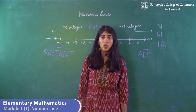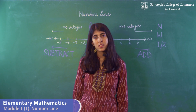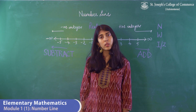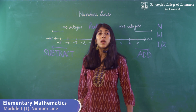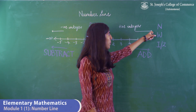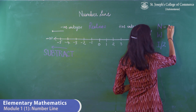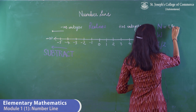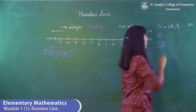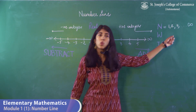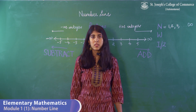The first type of number we're going to look at are natural numbers. Natural numbers are also called counting numbers. They are represented by the letter N, and they start with the number 1, 2, 3, and they move on to infinity. If you notice, natural numbers are mostly positive numbers.